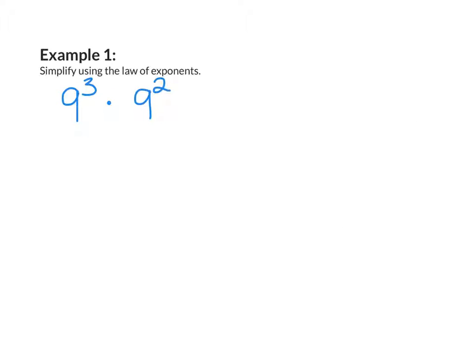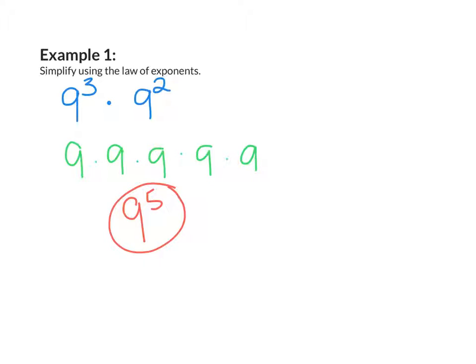Example 1: Simplify using the law of exponents. I have 9 to the 3rd power times 9 to the 2nd power. What this means is that I'm going to multiply 9 three times, times 9 two times. How many 9's are being multiplied together? That would be 9 to the power of 5. Or, I could just look at my exponents, the 3 and the 2, add them together, and that will still give me 9 to the power of 5.